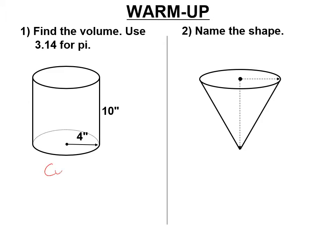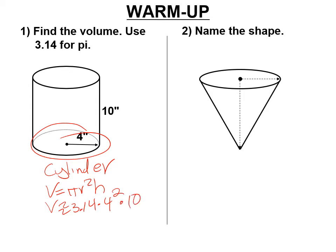This is a cylinder, and the volume of a cylinder is pi r squared, which is the area of the base, times the height. So it says use 3.14, so I'm going to do that times the radius here, which is 4, which I'm going to have to square, times 10.